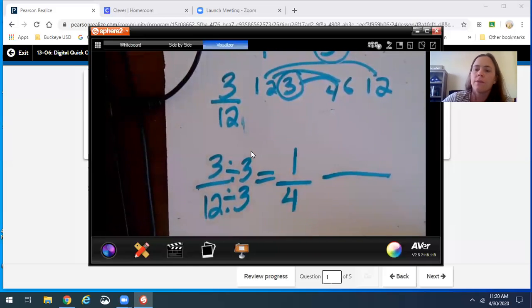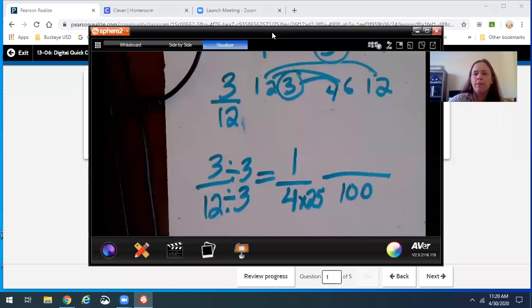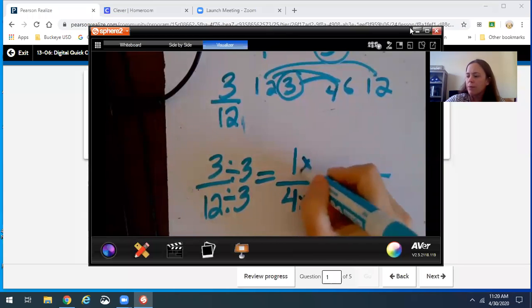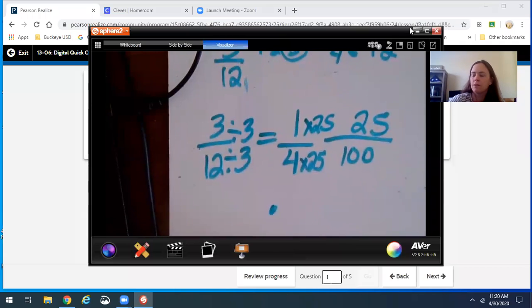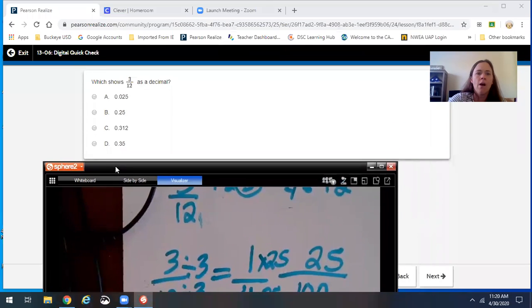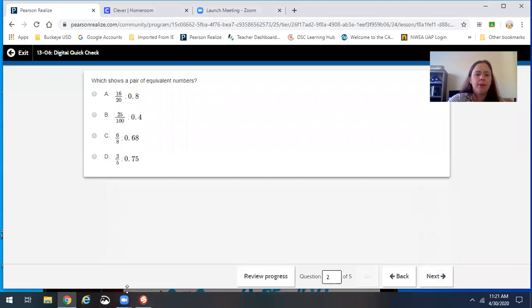Now I know that whenever I see a 4, if I times it by 25, that will give me 100. So then 1 times 25 is 25 hundredths, so this equals 25 hundredths, so that should be the answer to number 1, which was B.